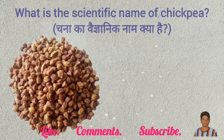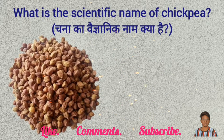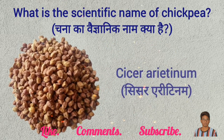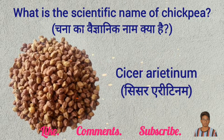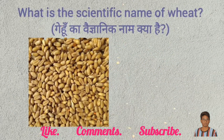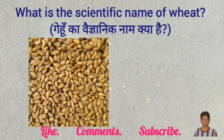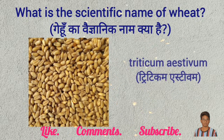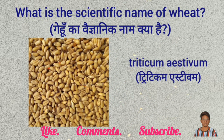What is the scientific name of chickpea? Cicer arietinum. What is the scientific name of wheat? Triticum aestivum.